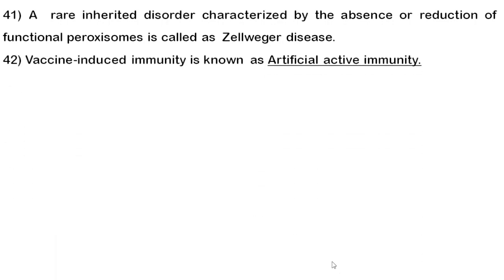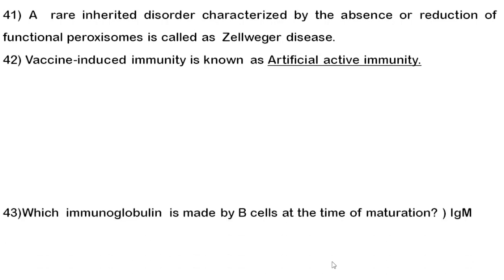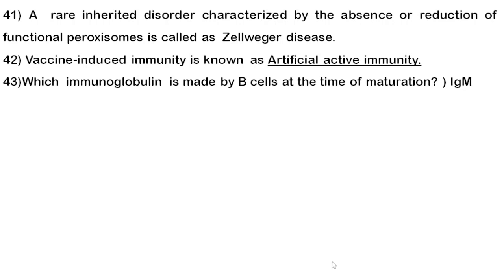Forty-second question: vaccine-induced immunity is known as artificial active immunity. You should also know what kind of immunity is given by the mother's breast milk, and what kind of immunity is conferred by blood transfusion.